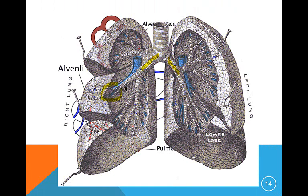Once we get to the bronchioles, instead of being cartilage, they're replaced by smooth muscle. The bronchioles are just tiny little airways. Each of those alveoli is wrapped in a pulmonary capillary bed, and there are three million in each lung. Each alveolus is just a thin-walled, single layer of epithelial cells to allow for easy diffusion to take place for gas exchange.